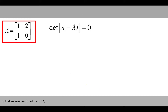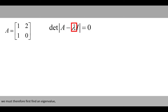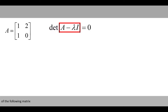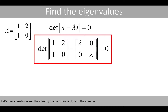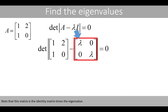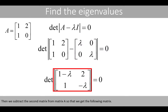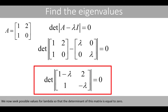To find an eigenvector of matrix A, we must therefore first find an eigenvalue so that the determinant of the following matrix is equal to zero. Let's plug in matrix A and the identity matrix times lambda in the equation. Note that this matrix is the identity matrix times the eigenvalue. Then we subtract the second matrix from matrix A, so that we get the following matrix. We now seek possible values for lambda so that the determinant of this matrix is equal to zero.